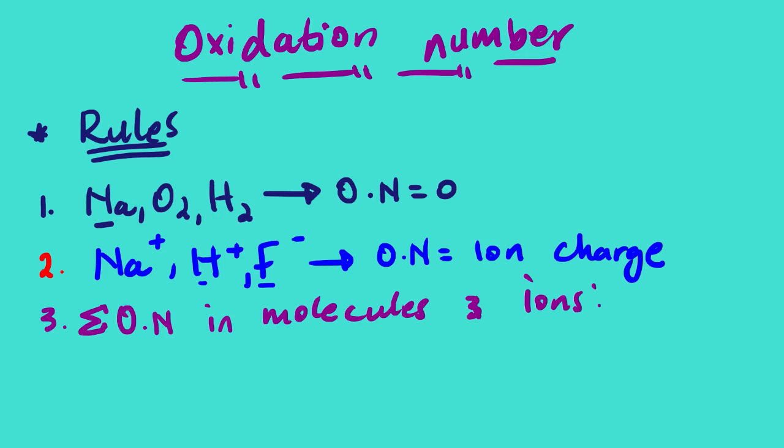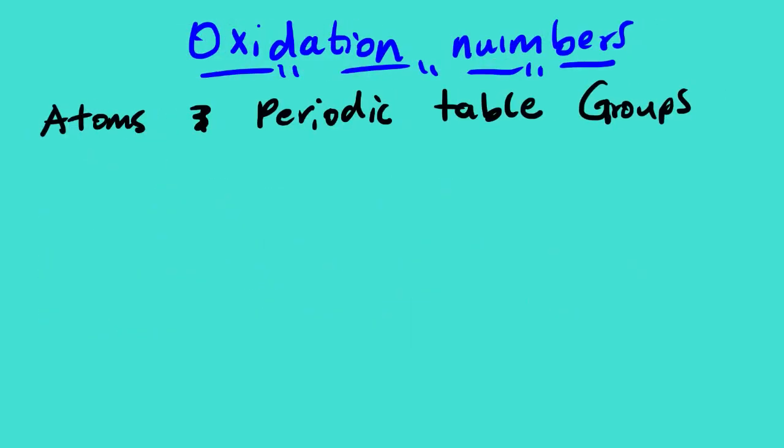The third rule: the sum of the oxidation numbers of a molecule is equal to the overall charge of that molecule or ion. We will explain this rule in detail when we look at the first example, so stay tuned. We now have another set of rules which focus mainly on atoms and predictable groups.